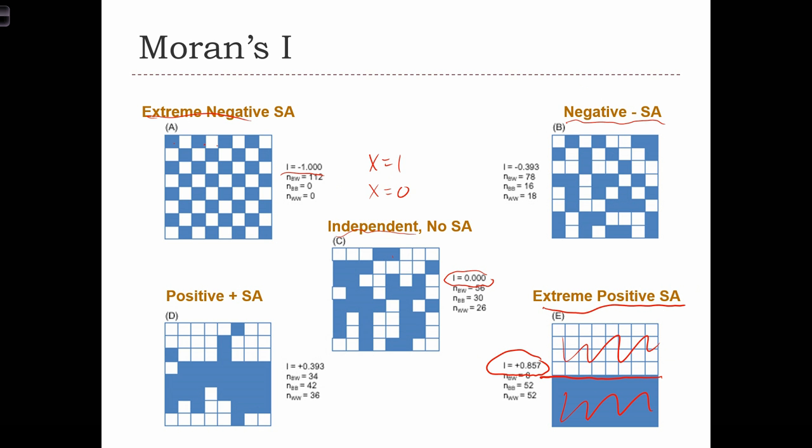So we don't quite have this super regular pattern like a checkerboard, but this pattern puts high and low values close together more so than we see high and low values closer together in this independent case. And here we have positive spatial autocorrelation but a rather moderate level of 0.4.